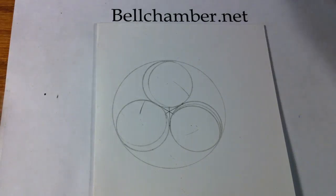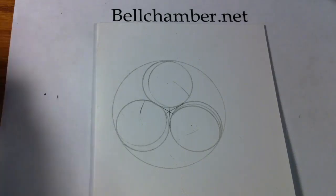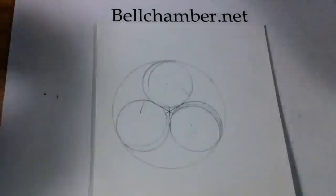This is part two of how to draw a spiral, a Celtic spiral Triskel. Take your ink marker.